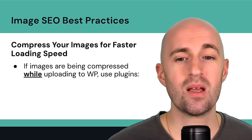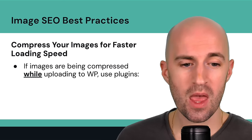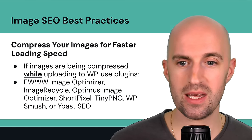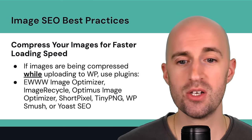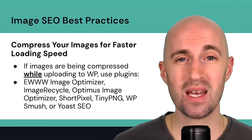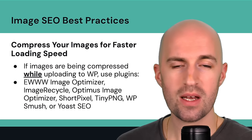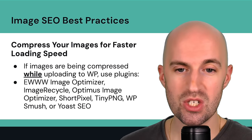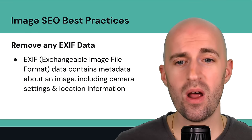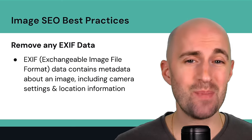If images are being compressed while uploading to a CMS like WordPress, use some of these plugins: EWWW Image Optimizer, Image Recycle, Optimus Image Optimizer, ShortPixel, TinyPNG, WP Smush, or Yoast SEO. All of these are great options for compressing images within WordPress.